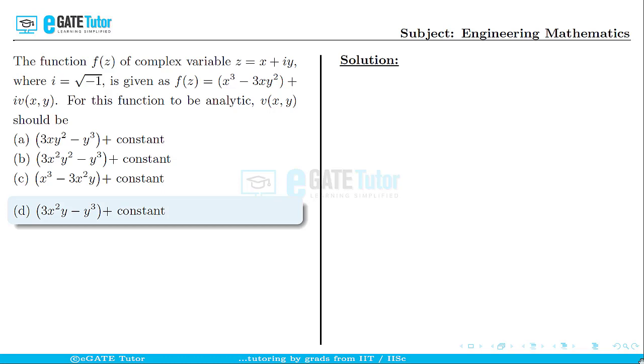Basically, this question is from the topic complex variables. We are given a complex function whose real part is x³ - 3xy², and we need to determine the imaginary part of the function. The four options are displayed on the screen, and according to the official key, the correct answer is option d.